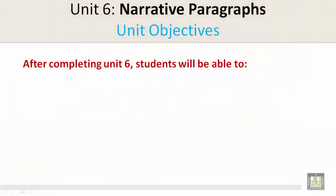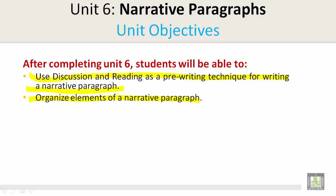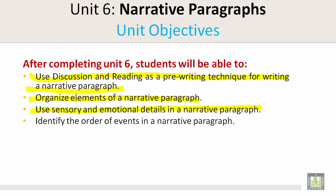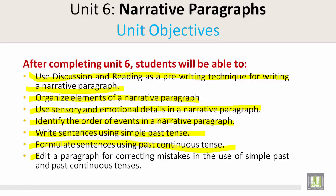After completing Unit 6, students will be able to use discussion and reading as a pre-writing technique for writing a narrative paragraph. Organize elements of a narrative paragraph. Use sensory and emotional details in a narrative paragraph. Identify the order of events in a narrative paragraph. Write sentences using simple past tense. Formulate sentences using past continuous tense. And edit a paragraph for correcting mistakes in the use of simple past and past continuous tenses.